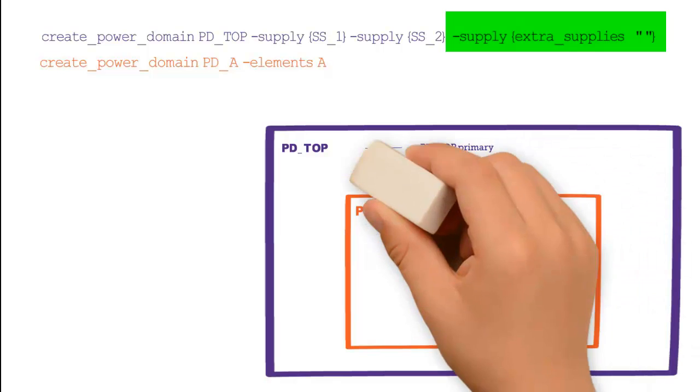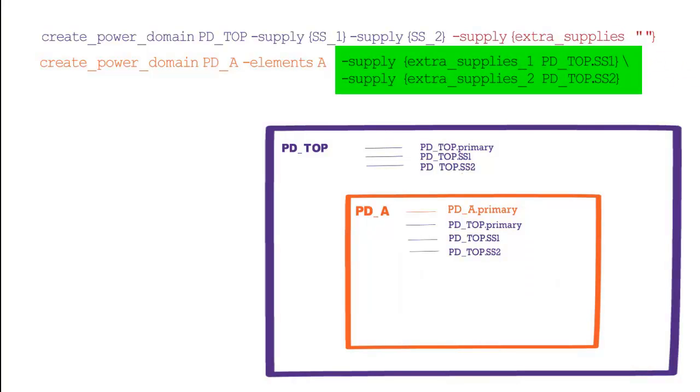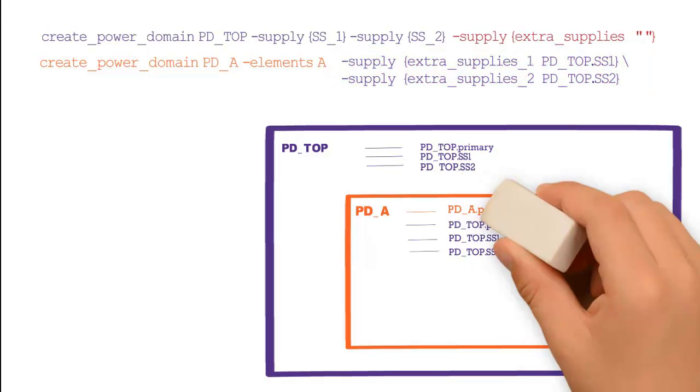To selectively control the availability, provide the required list of supplies using extra_supplies_one_two as shown, which will remove PD_TOP.primary from PD_A in this case.